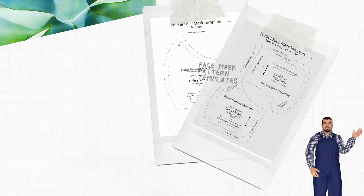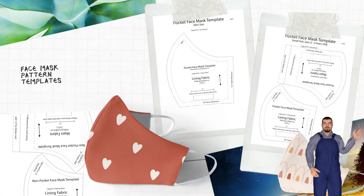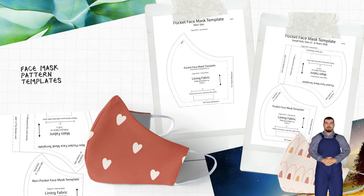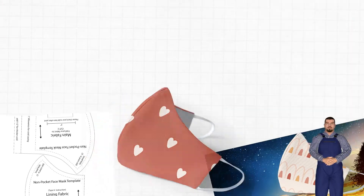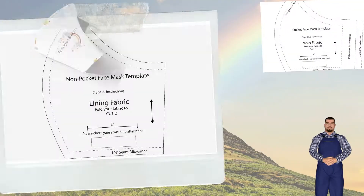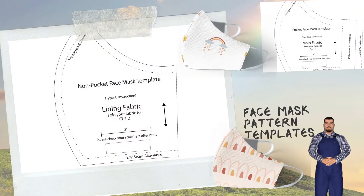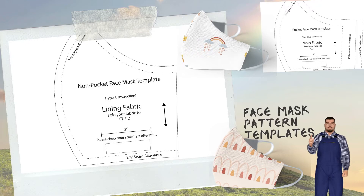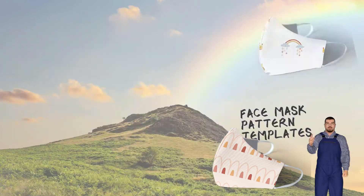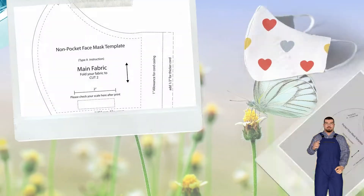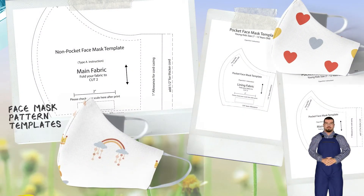3. Pocket Face Mask Sewing Pattern with 3/8 inch seam allowance included; you may sew with 1/4 inch seam allowance. Use on Type B and C: men, women/teenagers, kids 7 to 12, kids 3 to 6.